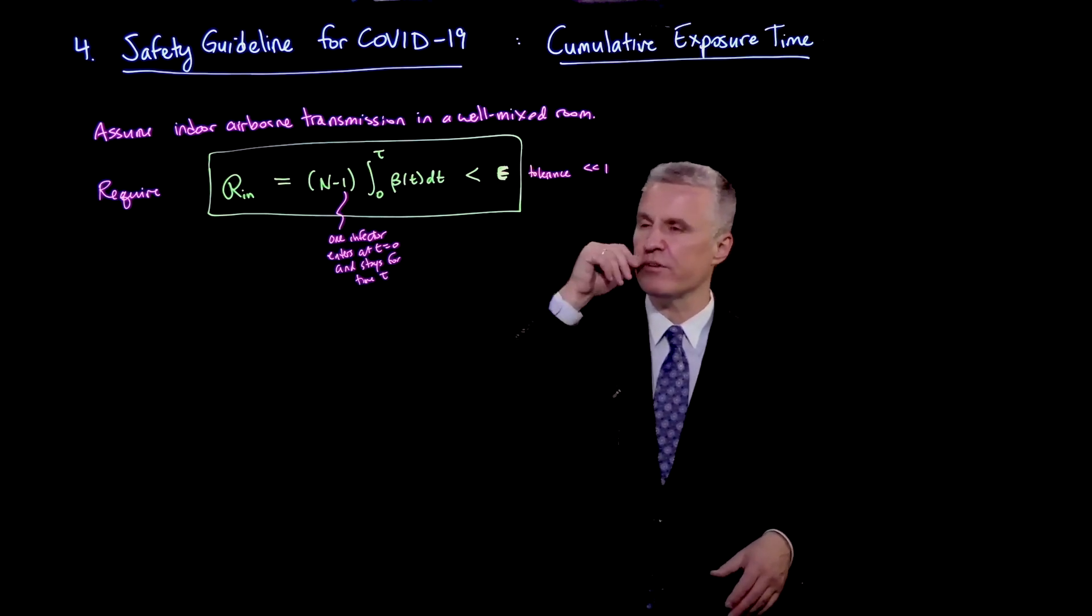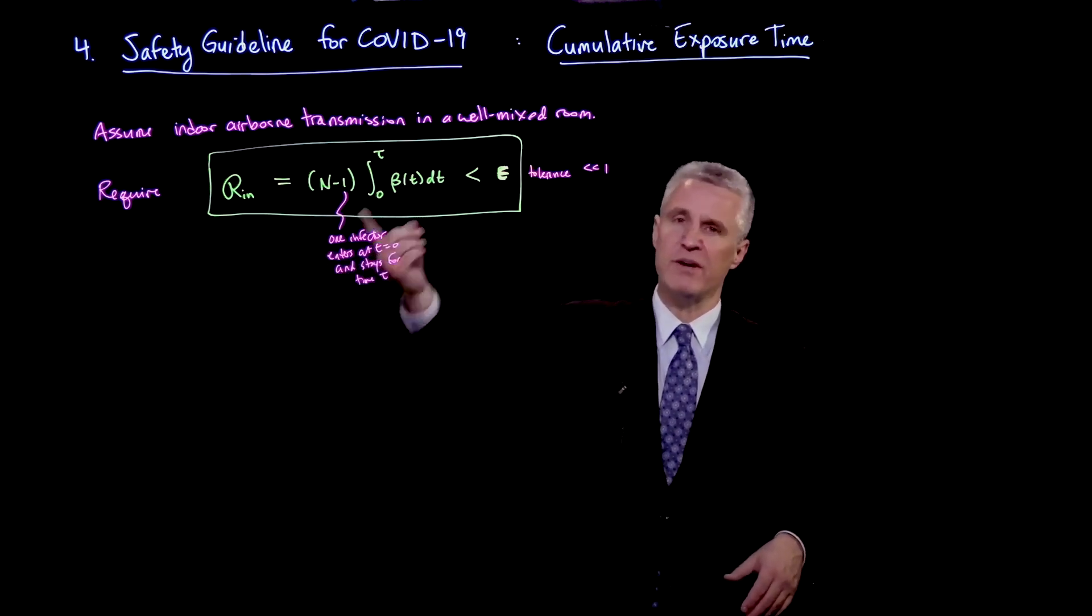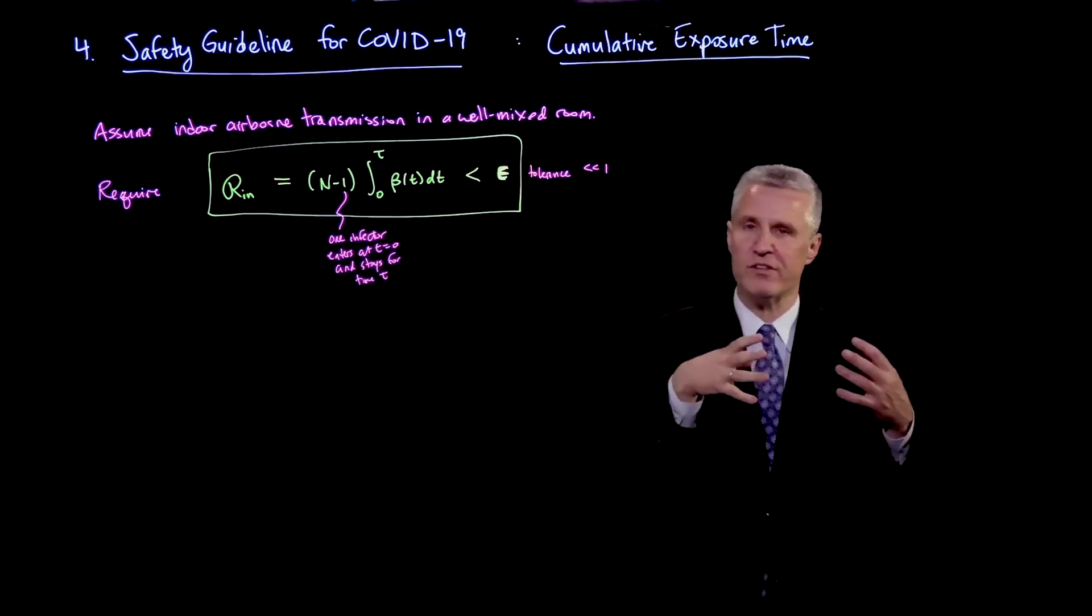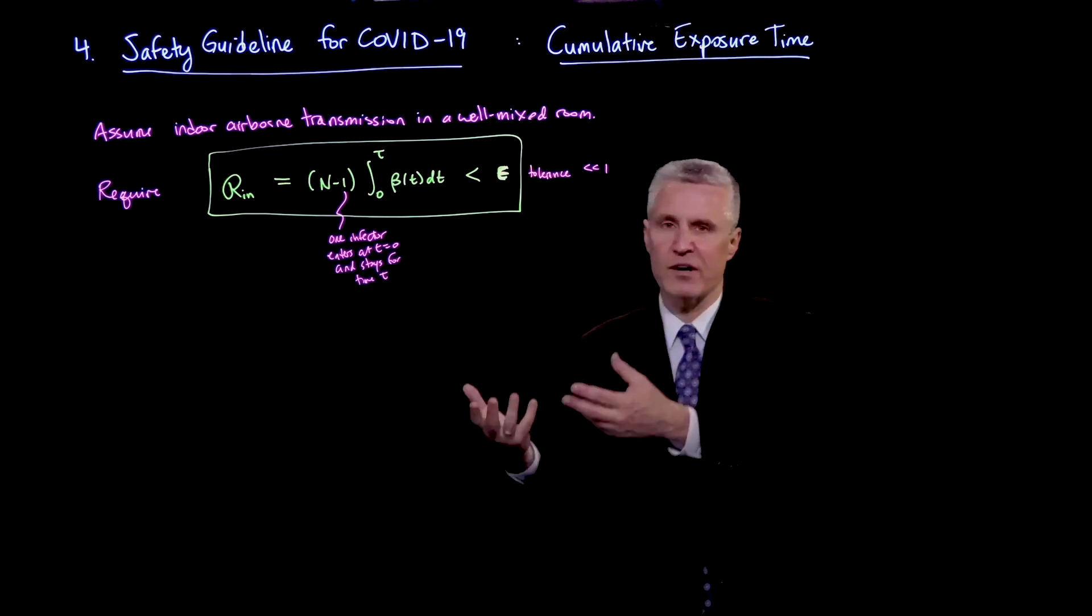Then no rooms would contribute to spreading the disease. So then this criteria would say that if two infectors came, they might infect two people, or three infectors, you worry about three people. What we want to make sure is that the number of infectors is not growing.